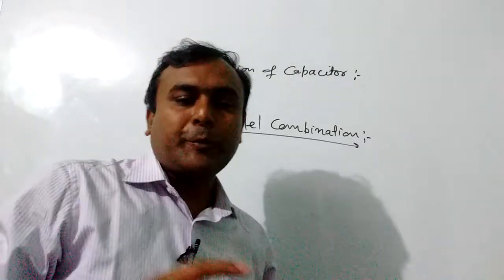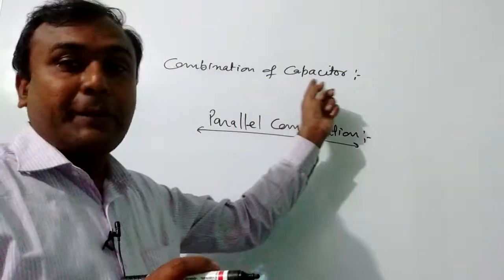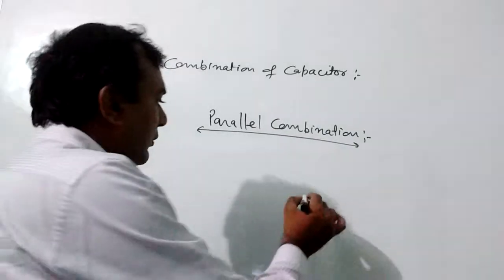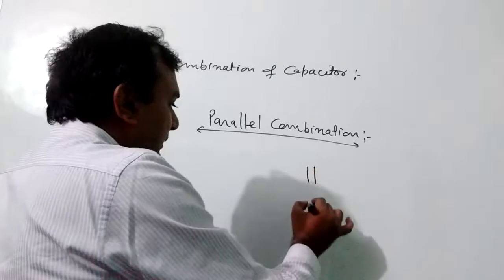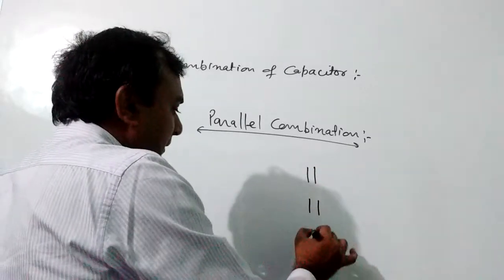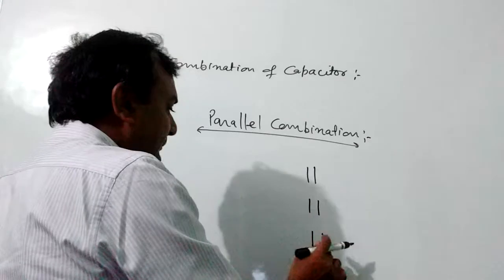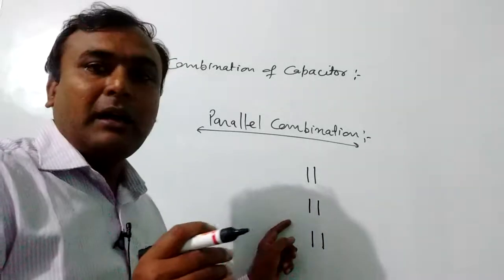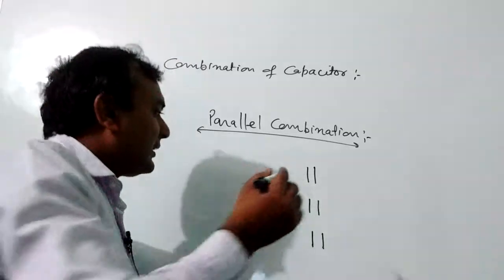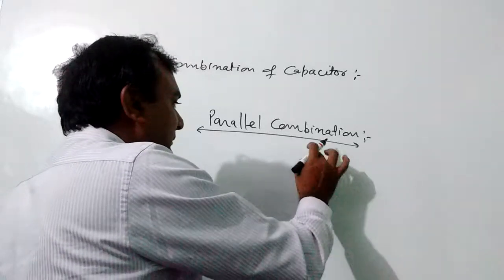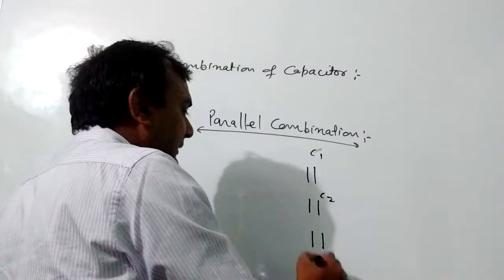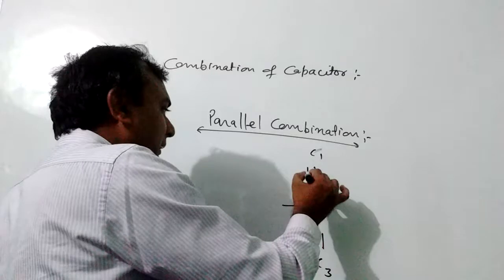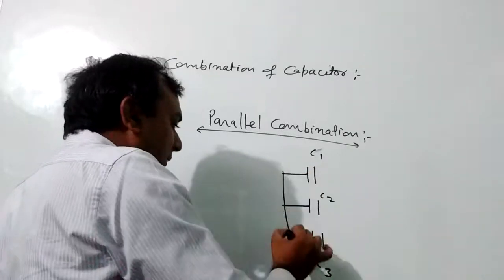Today's topic is the parallel combination of capacitors. In this combination, two or more capacitors remain connected in parallel, or two or more capacitors are connected to a battery separately. This is C1 capacitor, this is C2, and this is C3 capacitor. This is the point of the battery separately.